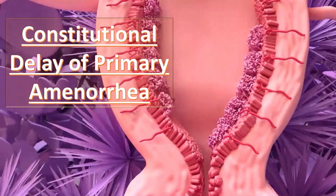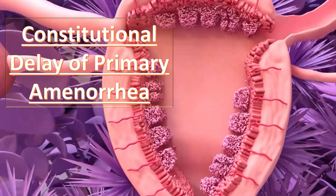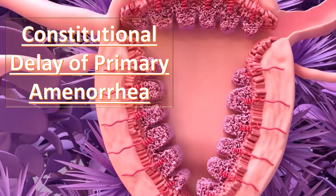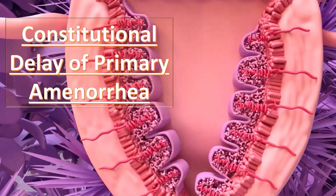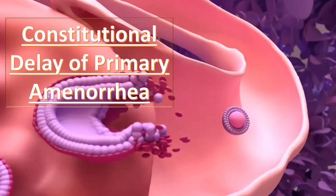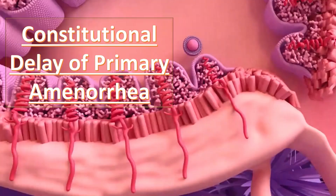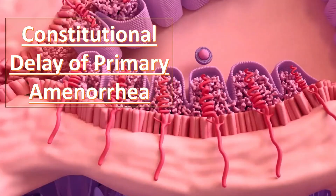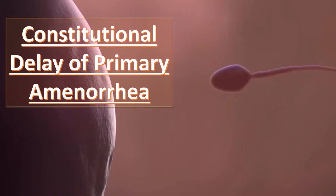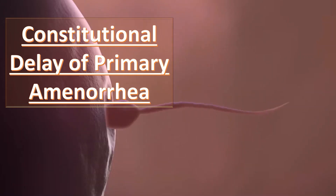For constitutional delay, if no cause is found on detailed evaluation and the patient does not want to conceive, treatment can be delayed up to age 20, when spontaneous menstruation starts in most of these patients. Counseling should be provided that amenorrhea may be delayed up to age 20.